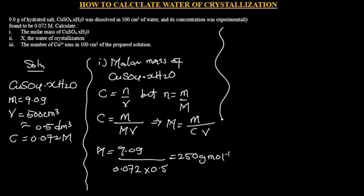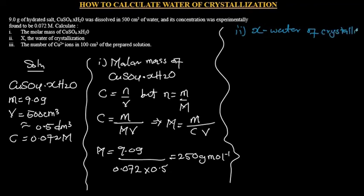The other part of the question says we should find X, the water of crystallization. Now that we know the molar mass, we will have to use the molar mass — which we calculated as 250 g/mol — to work out the value of X.